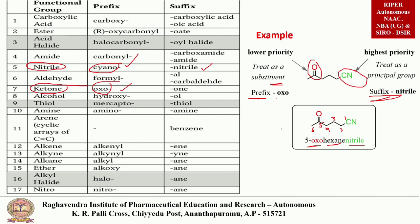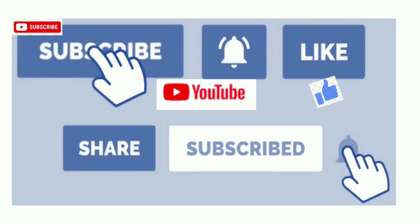This is the IUPAC naming rules for benzene and its derivatives. If you like this video, please subscribe to my channel and click the bell icon to get more notifications. Thank you.